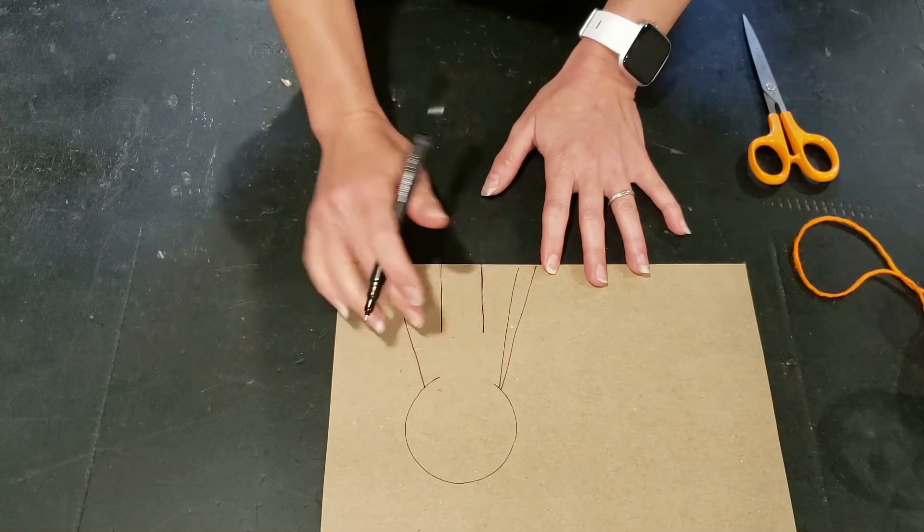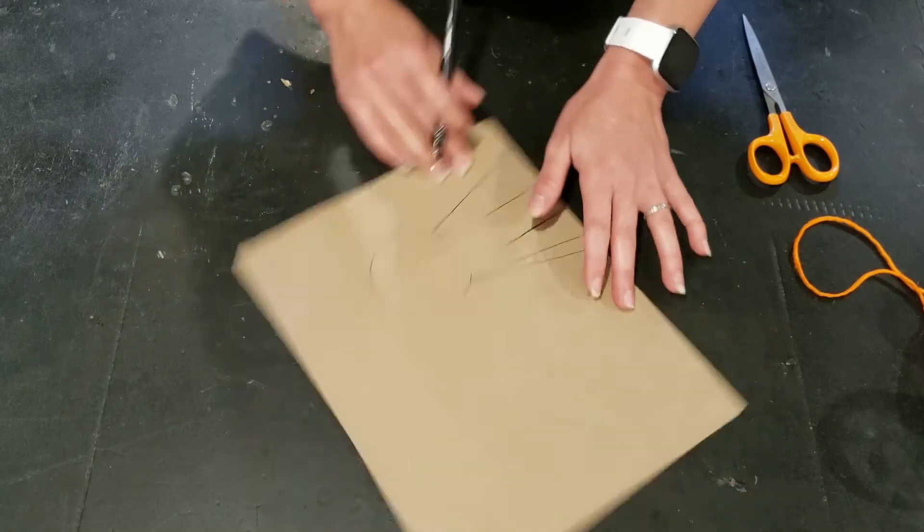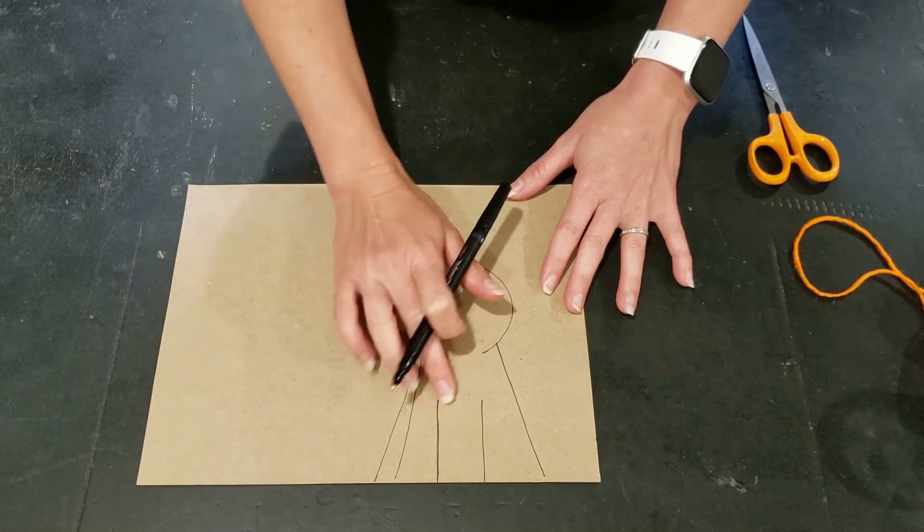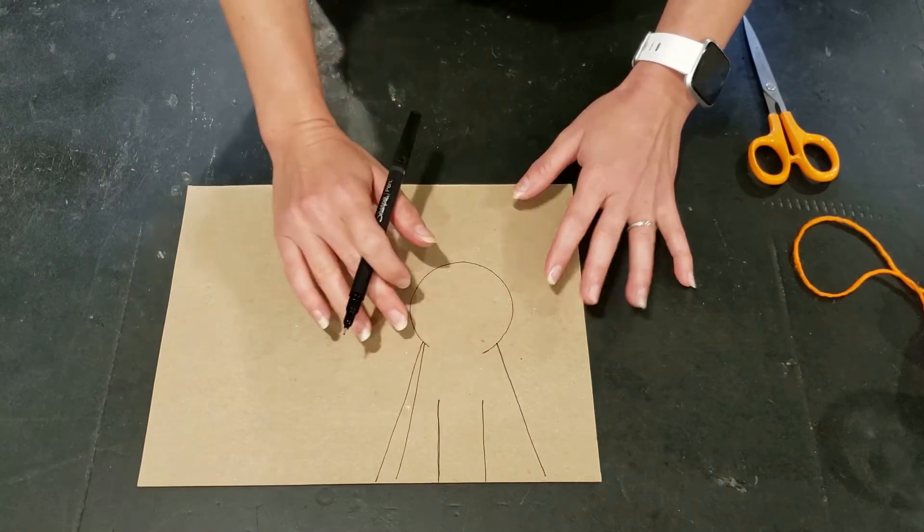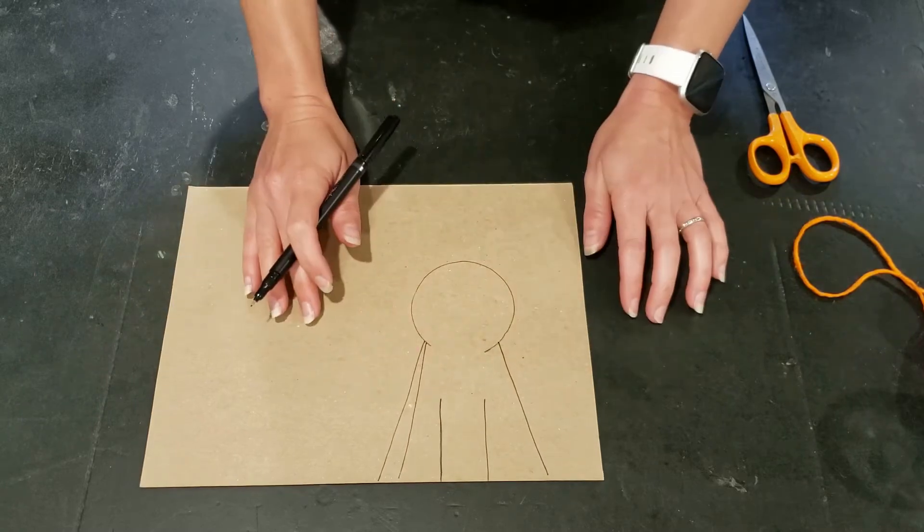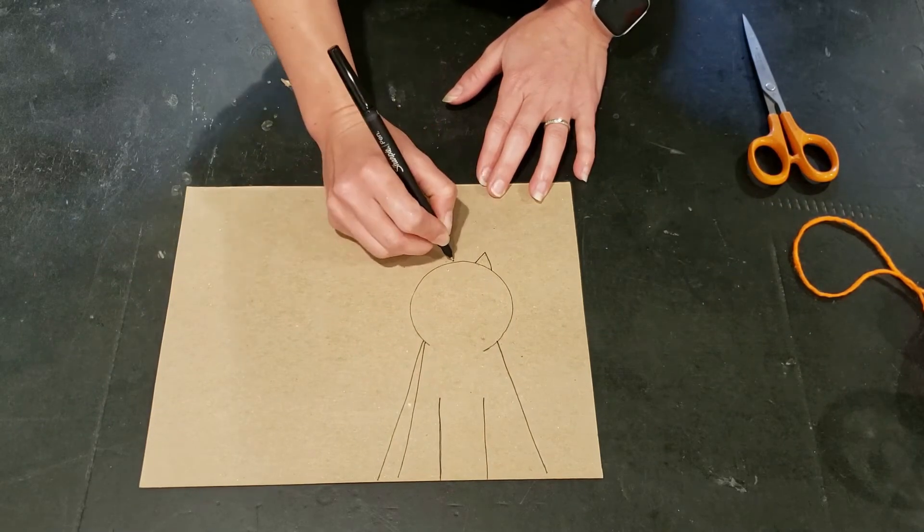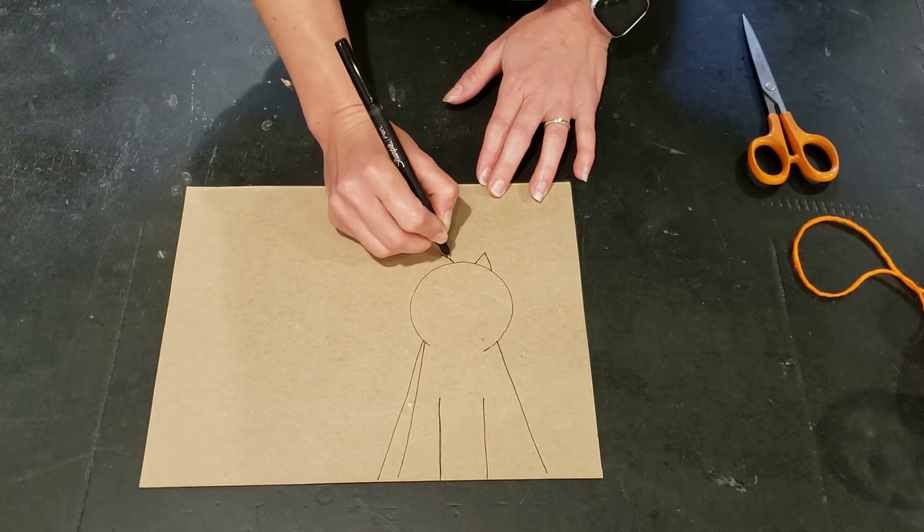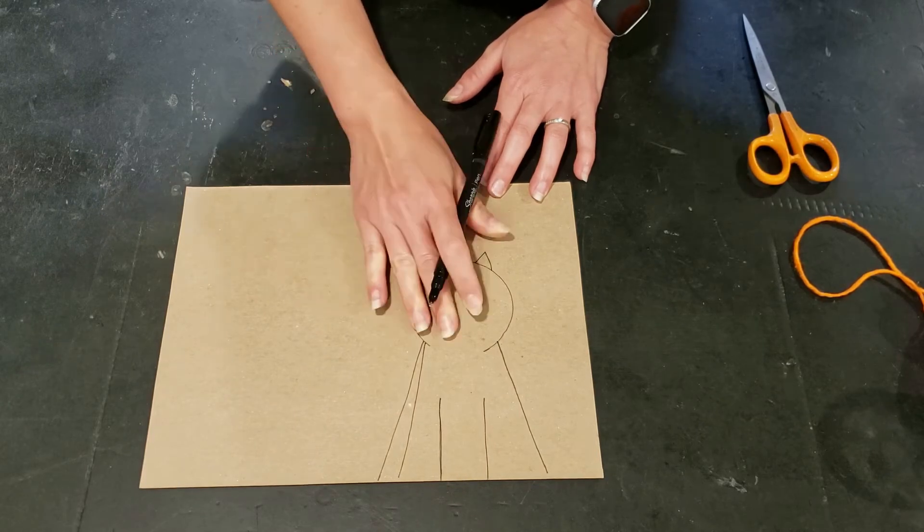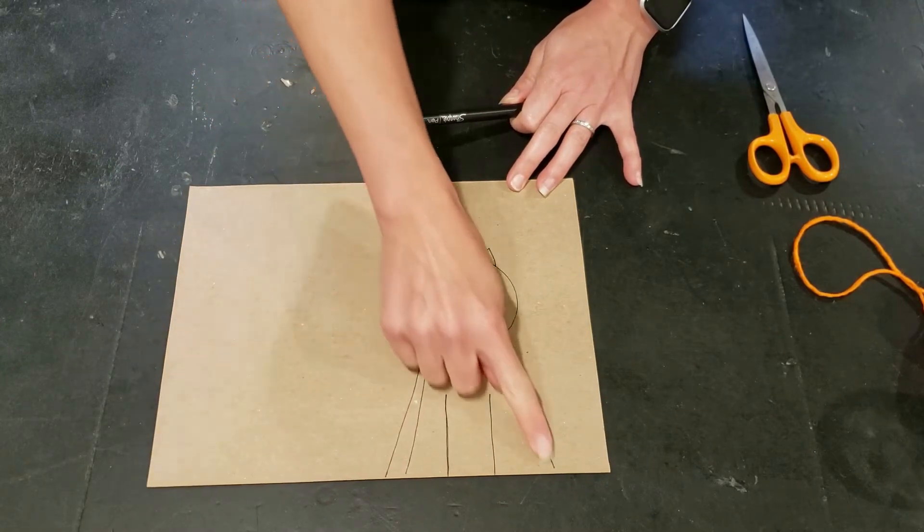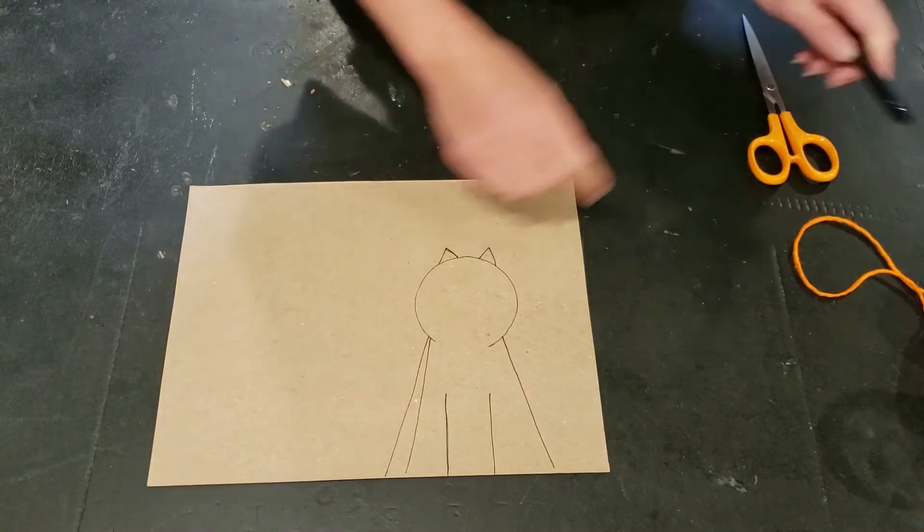But you don't want to cut the whole way up to the neck so you want to leave a good amount between the head and where you will make your lines for your notches because this is going to be the body of your cat. And then go ahead and add some ears for your kitty. And then I did this on the back of the packaging so that it didn't matter that I messed up my line here and now I'm going to go ahead and cut that out.